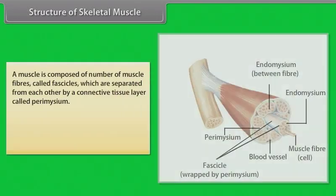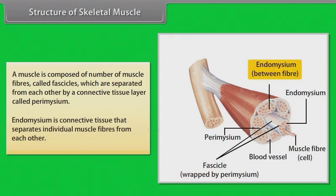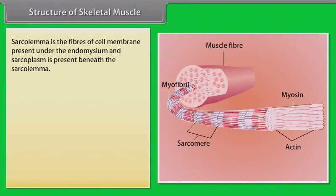Structure of skeletal muscles: a muscle is composed of a number of muscle fibers called fascicles, which are separated from each other by a connective tissue layer called perimysium. Endomysium is connective tissue that separates individual muscle fibers from each other.